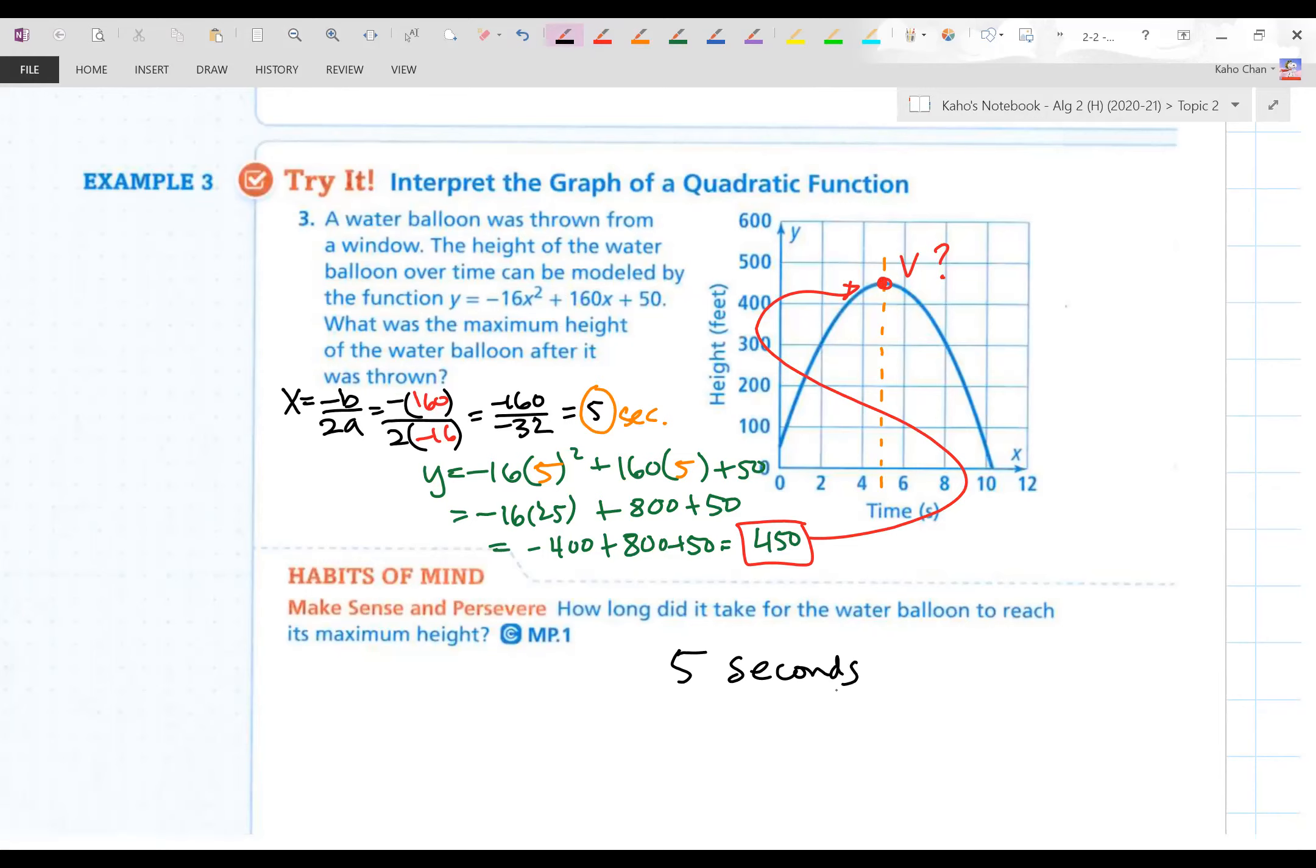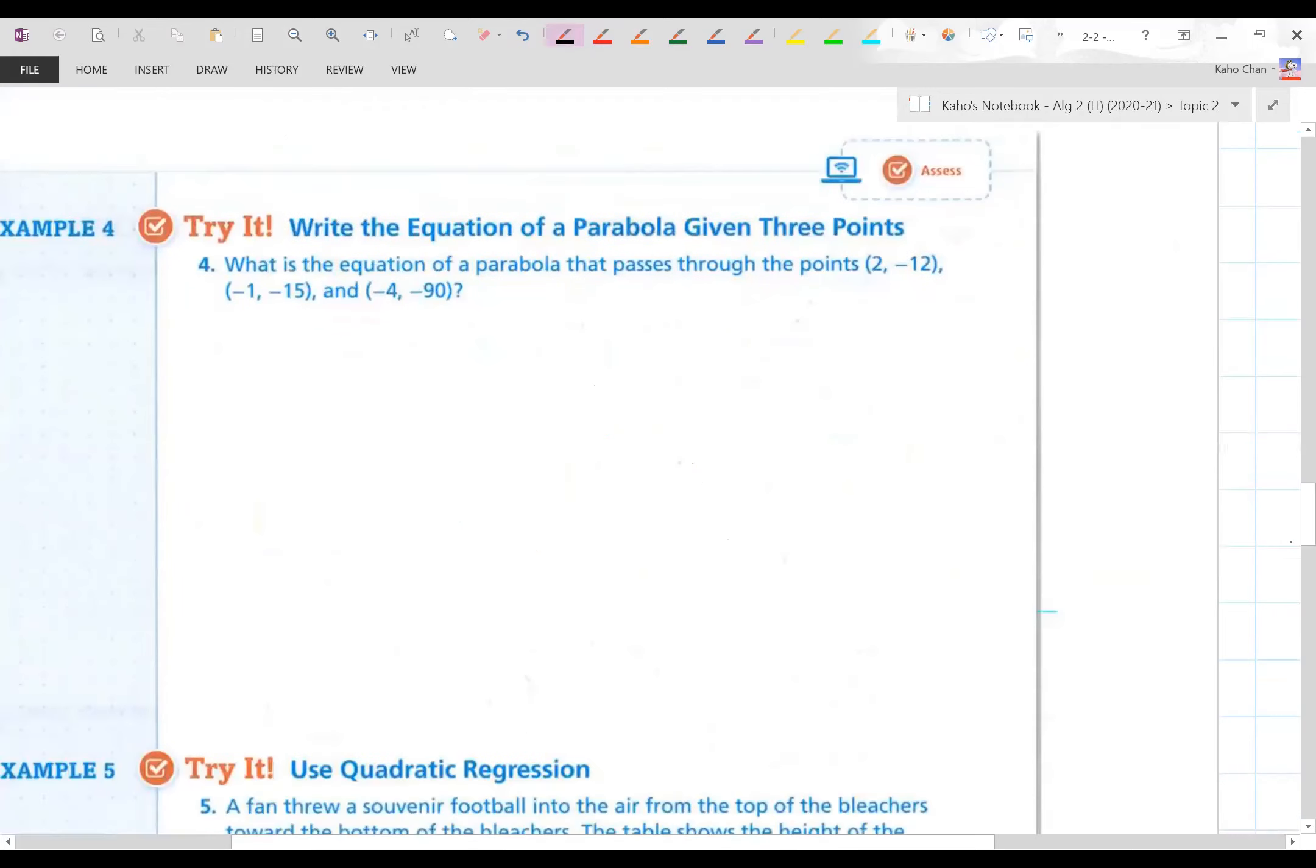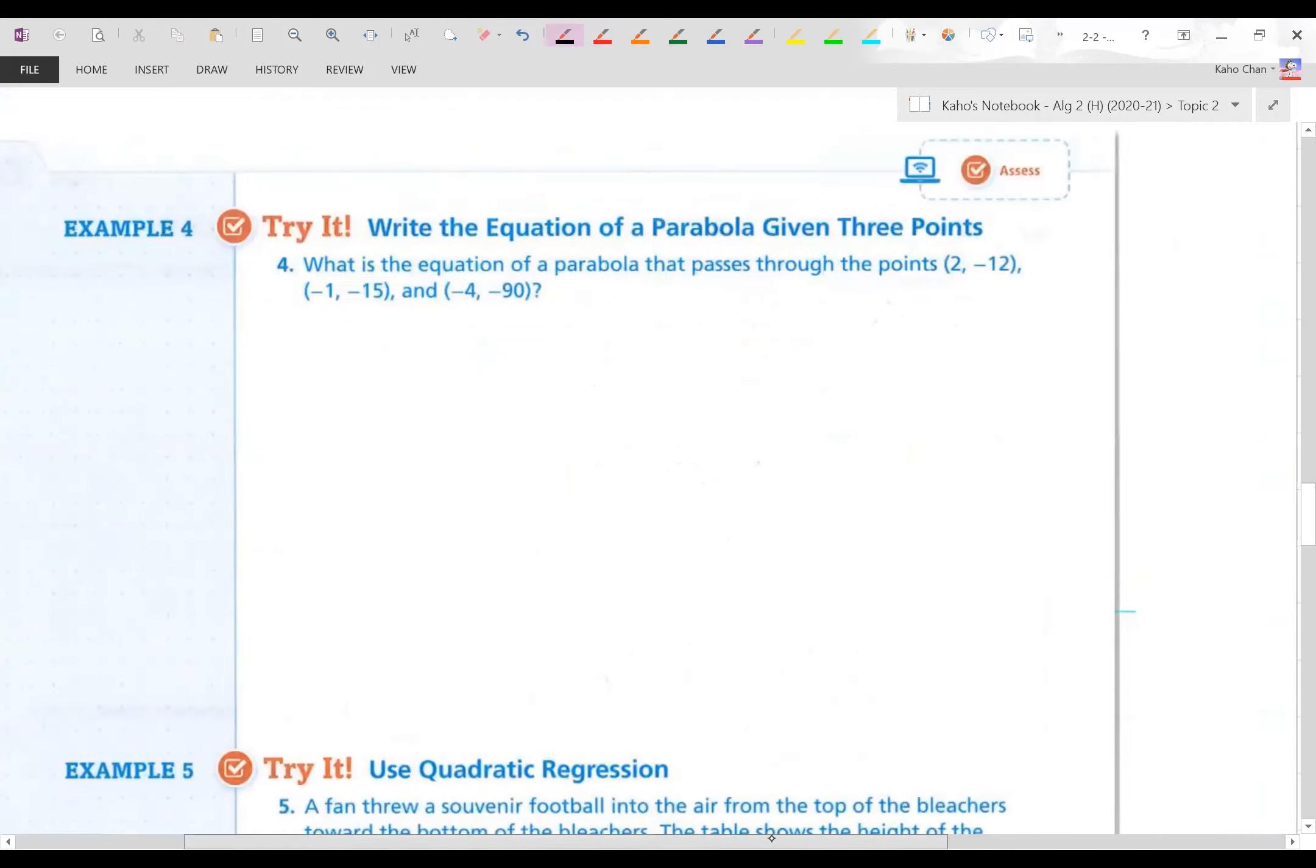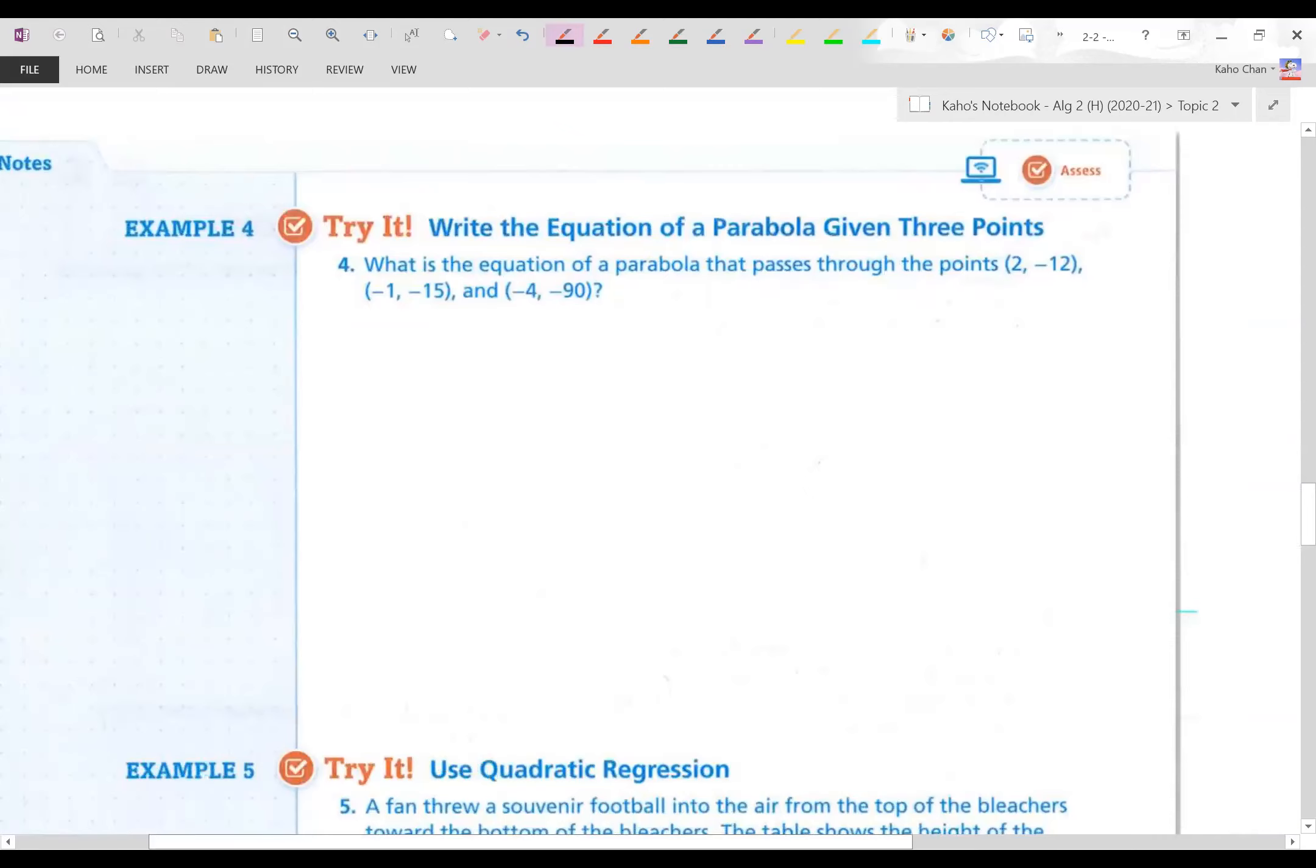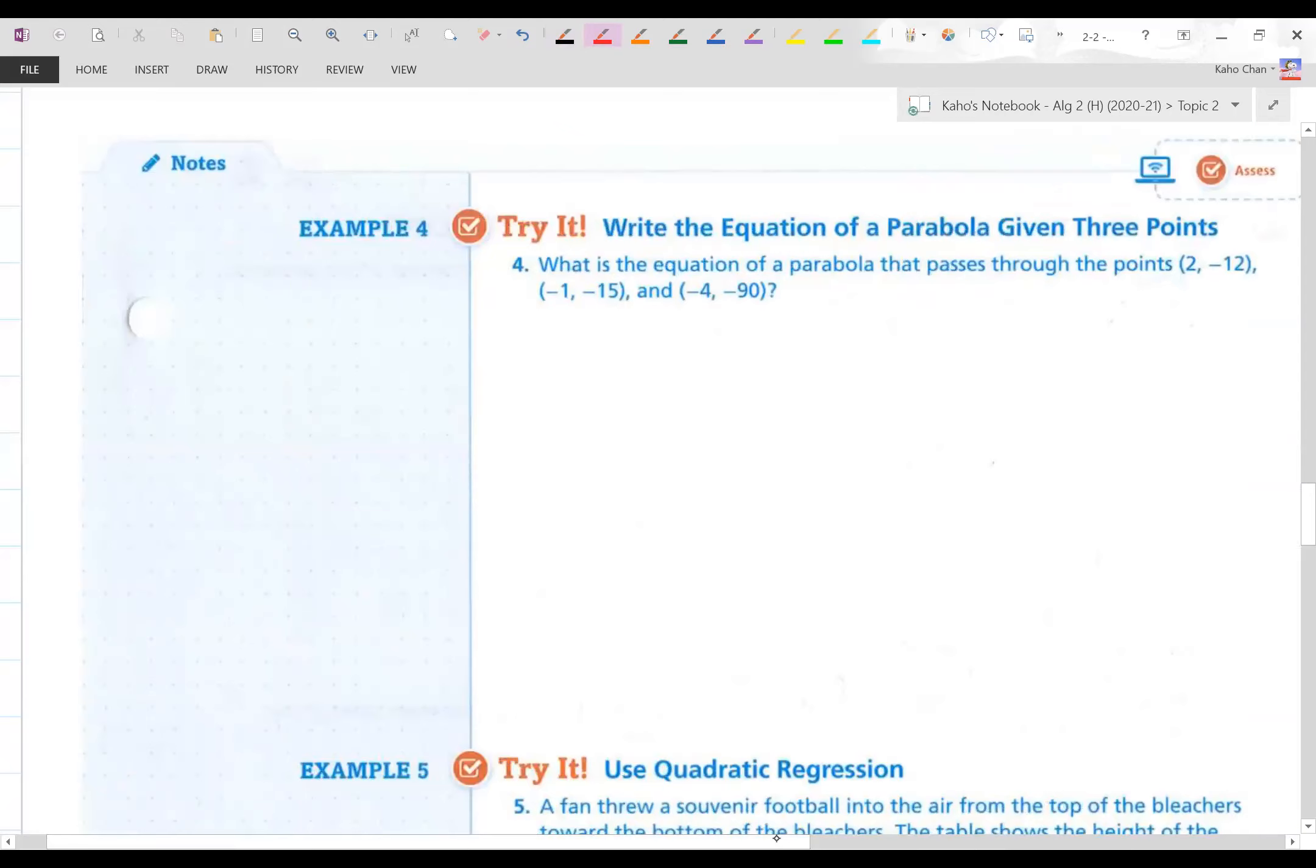Example 4 is next. This is one of the harder things that we do in Algebra 2. We have to come up with a parabola based off of three random points. You have to treat those points as x's and y's. I'm going to use different colors here. We are going to put it into the standard equation y equals ax squared plus bx plus c three times because there are three different points. I'm going to color code them. x, y, x, y, and x, y. And I want to literally substitute it into that standard form and go from there.